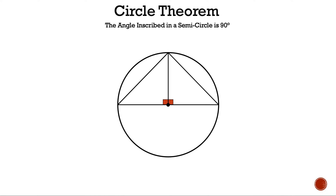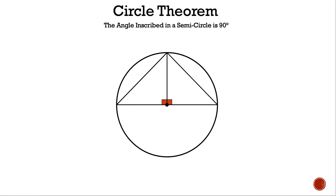Let's discuss why this theorem is true. We have two right triangles formed — one on the left and one on the right. All the legs of the right triangles are radii. Focusing on the triangle on the left, since its two legs are the same, we have an isosceles triangle, meaning the two base angles are equal.